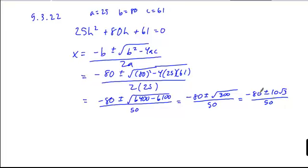And when you look at each of these terms, 80, negative 80, 10, and 50 have a common factor of 10. So you wind up with negative 8 plus or minus the square root of 3 all over 5 as your solution.